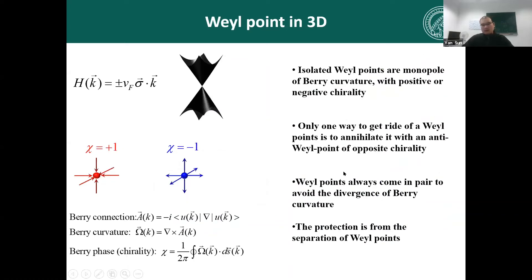The special thing about the Weyl point is that it acts as a source of Berry curvature. We can define the chirality of the Weyl point. The only way to annihilate a Weyl point is to have the two Weyl points meet each other in k-space. In this way, you open up a gap and kill the Weyl point.